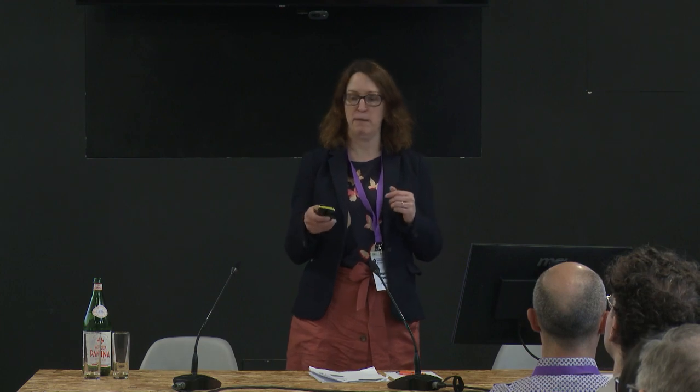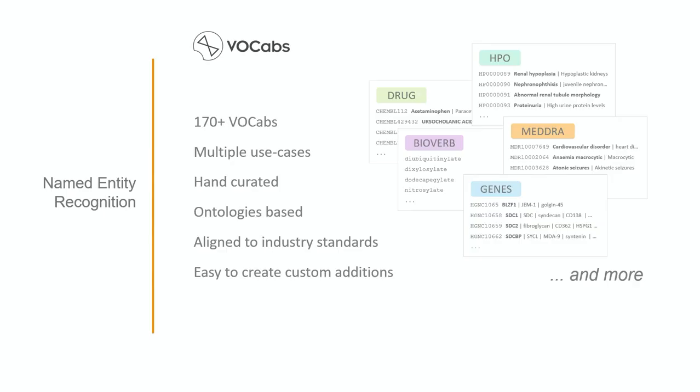We create these sets of vocabularies — we've got over 170 of these at SciByte — and they cover domains from things like adverse events, phenotypes, diseases, gene names, drugs, and so on. These are all hand-curated. We're lucky we've got a large curation team at SciByte. We align them to industry standards and we make custom additions. We fill in gaps, either adding in synonyms or adding in new entities where the term isn't there or doesn't quite fit the scope of what we need.